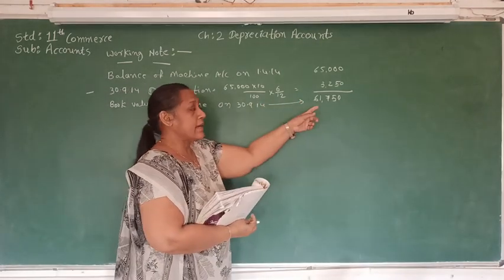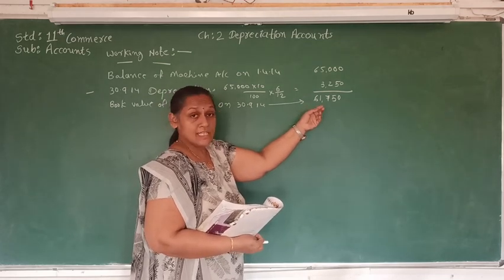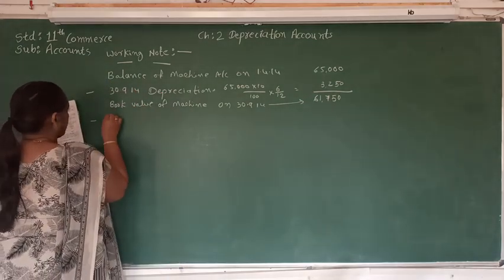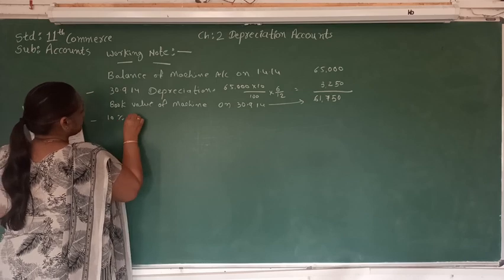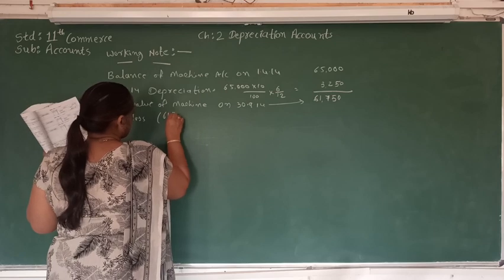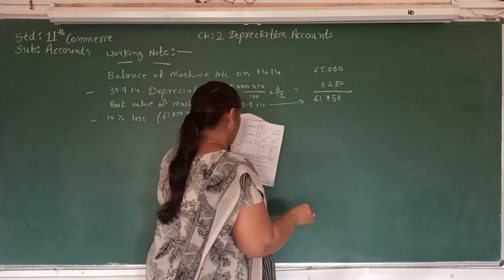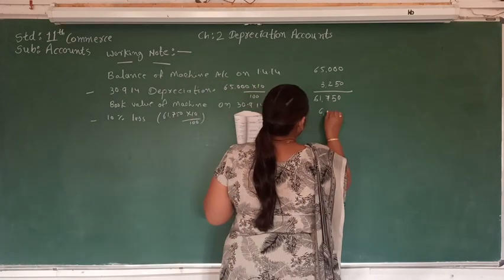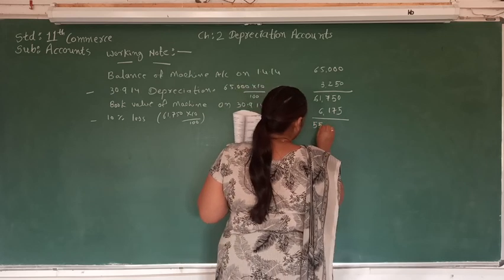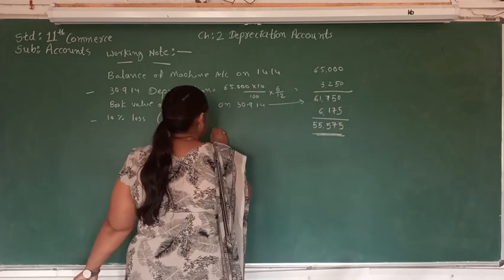Now, this machine is going to be sold at a 10% loss. So we have to calculate the loss on this book value. 10% loss on Rs. 61,750 into 10 upon 100 — so the amount of loss will be Rs. 6,175. If we deduct the loss amount, the selling price will be Rs. 55,575.